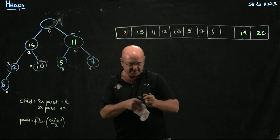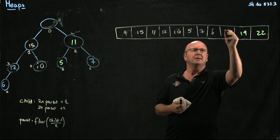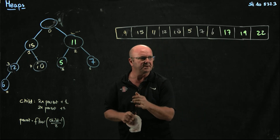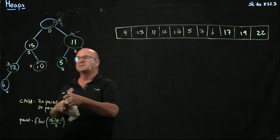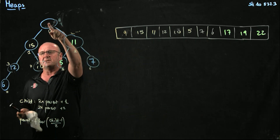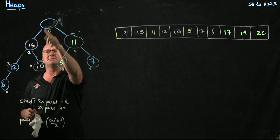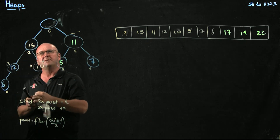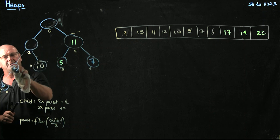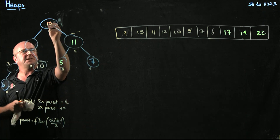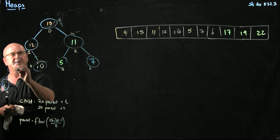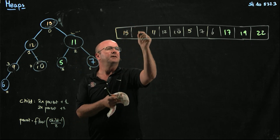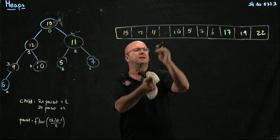We'll just swap those. But the 17 is not part of the heap anymore because we've decreased our last position counter. So we've got a 9 and we've got to readjust our heap. So we'll swap the 9 with a 15, and then we'll swap the 9 with a 12. So we'll end up with 15, 12, and 9.